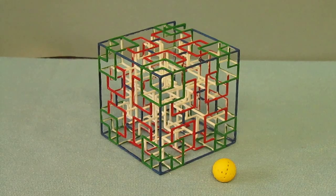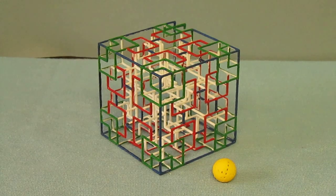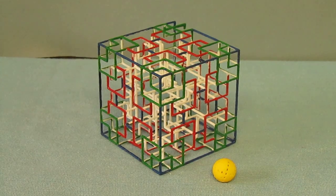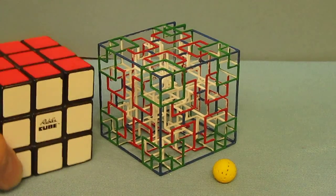The dimensions of this maze are 56 millimeters wide on each side or about 2 and 1/4 inches. This is about the size of a Rubik's Cube as you can see here.